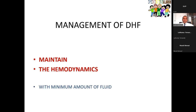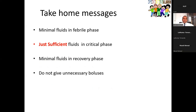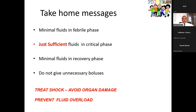Take-home messages: give minimum fluid in the febrile phase, minimum fluid in the recovery phase, but just sufficient fluid in the critical phase — not more, not less. Don't give unnecessary boluses, which increase pleural effusion and DIC. The two main causes of death in dengue are fluid overload and shock or organ hypoperfusion leading to multi-organ dysfunction syndrome. Give just sufficient fluid in the critical phase and you can prevent both.